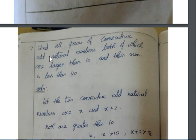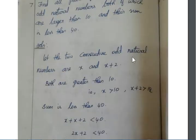Question number 7: Find all pairs of consecutive odd natural numbers both of which are larger than 10 and their sum is less than 40. We consider two consecutive odd natural numbers x and x plus 2, both greater than 10, so x is greater than 10 and x plus 2 is greater than 12.